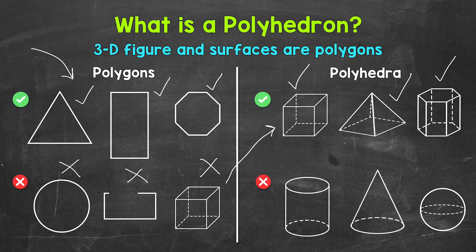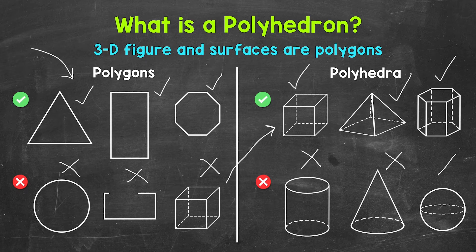Now let's take a look at three examples that are not polyhedra. They are all 3D figures, but the surfaces are not polygons. So a cylinder is not an example of a polyhedron. A cone is not an example, and a sphere is not an example. So, polyhedra are 3D figures where all of the surfaces, or faces, have to be polygons.